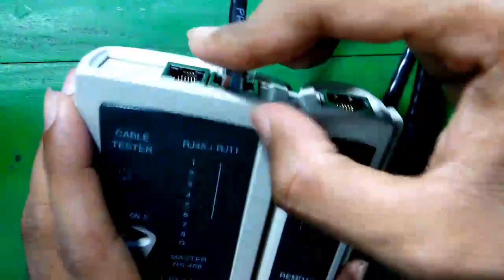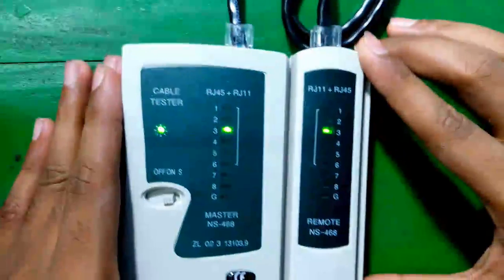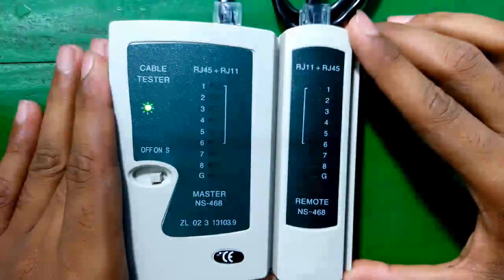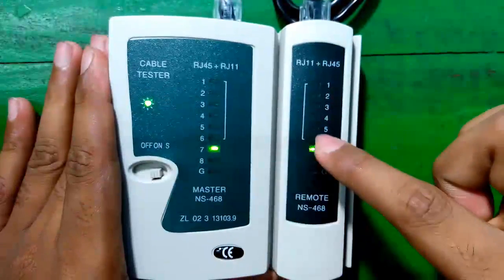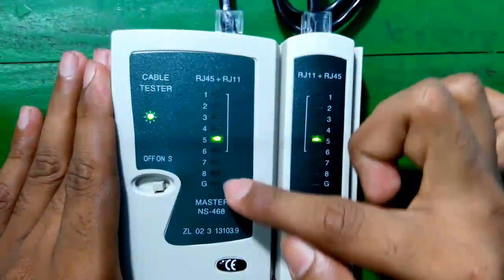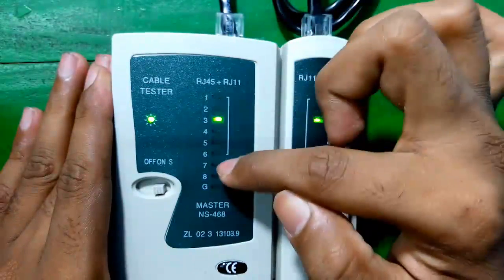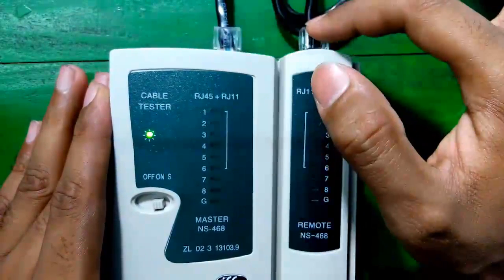To check it first, connect one end of the cable to the RJ45 port on the master and other end to the RJ45 port of the remote and turn on the device and check the connectivity. Once again, the connectivity is one to one, two to two, three to three, four to four, five to five, six to six, seven to seven and eight to eight. So what you can verify? You can verify, since all the LEDs are glowing, so all the cables are connected and the connectivity is straight since it is one to one connectivity. So you can check and confirm the cable is okay.